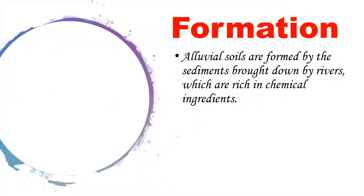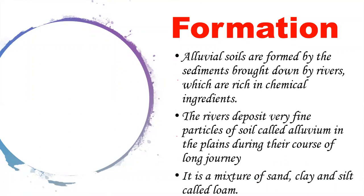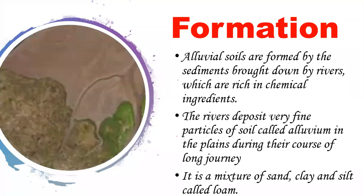Coming to the formation of alluvial soils. Alluvial soils are formed by the sediments brought down by rivers which are rich in chemical ingredients. The rivers deposit very fine particles of soil called alluvium in the plains during their long journey. It is a mixture of sand, clay and silt called loam. Alluvial soils are also known as riverine soils because they are majorly found in the river basins.